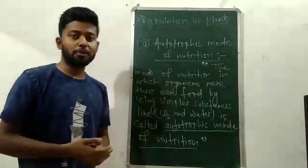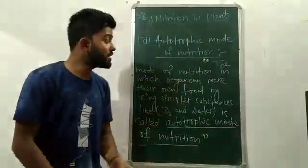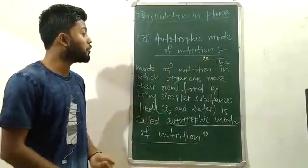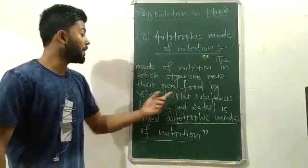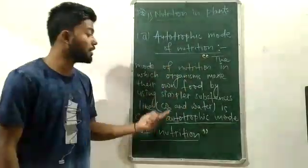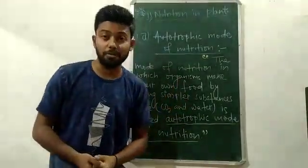The first mode of nutrition is autotrophic mode of nutrition. This is the mode of nutrition in which organisms make their own food by using simpler substances like carbon dioxide and water.